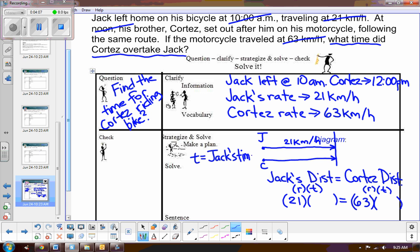So we'll let T represent Jack's time. Now you could have let T be Cortez time. I just picked Jack. So we'll let T be Jack's time. Now let's talk about Cortez time. He was on the motorcycle. Did he spend more time than Jack or less time than Jack? Well, he left at noon. He left two hours later. So he spent less time than Jack. He spent two hours less. So it would be Jack's time minus two. This is where you have to think folks. You have to think about the problem logically, what's going on.